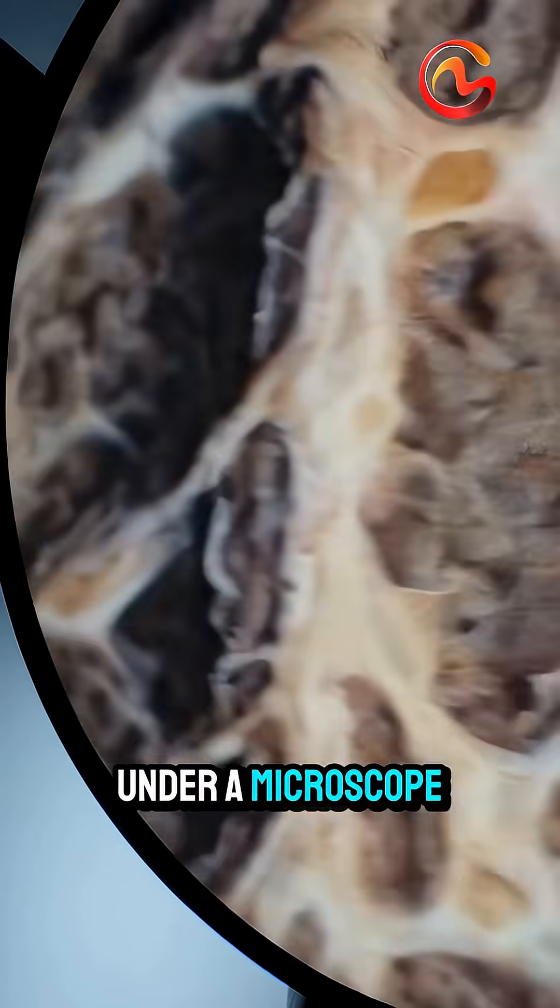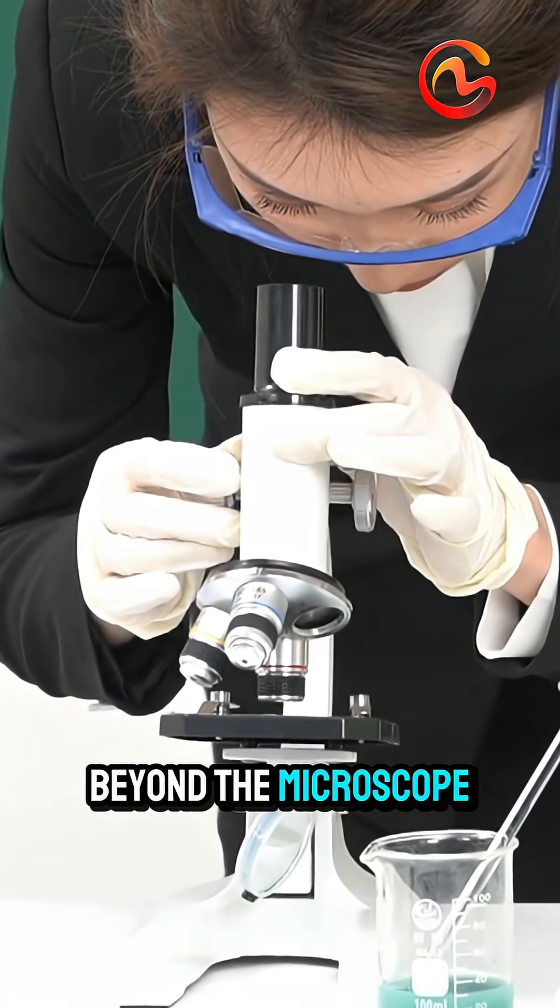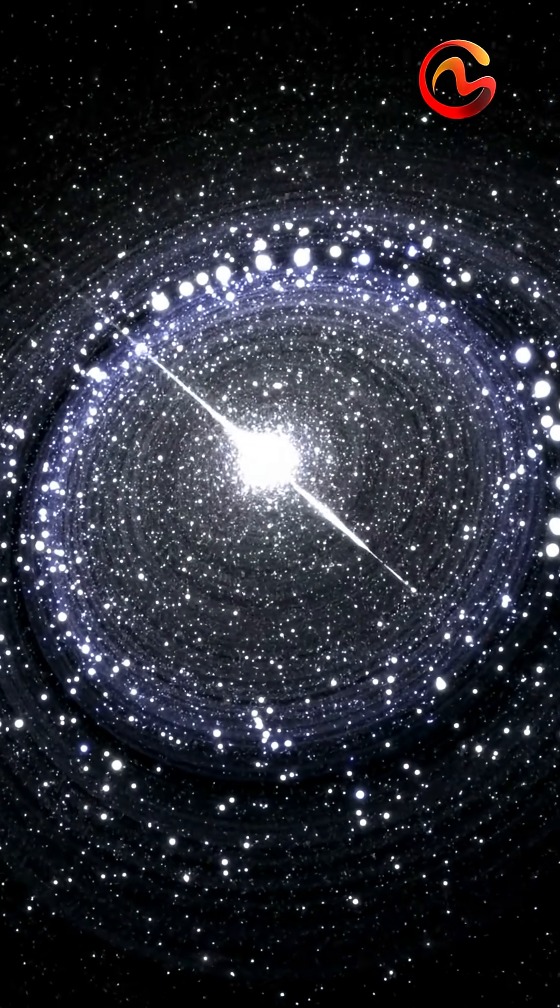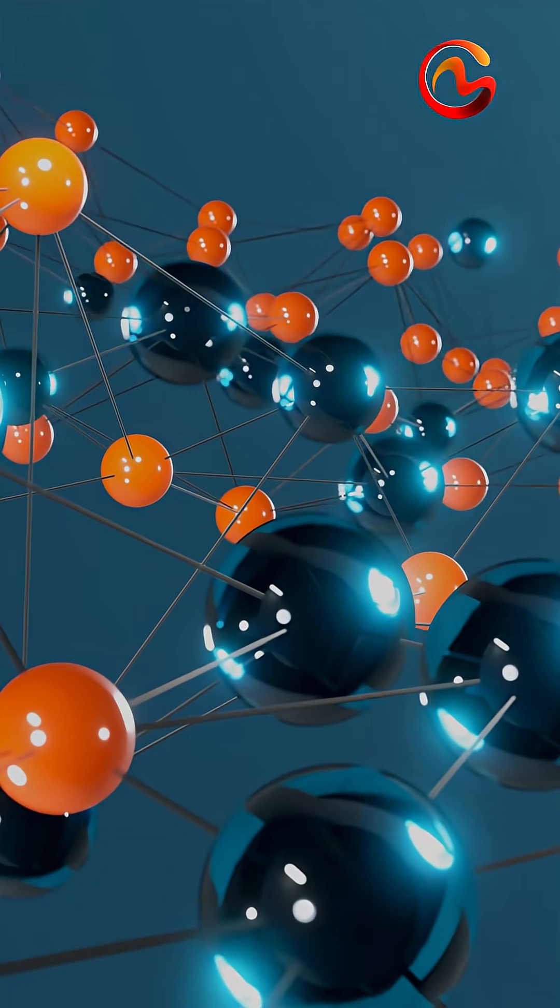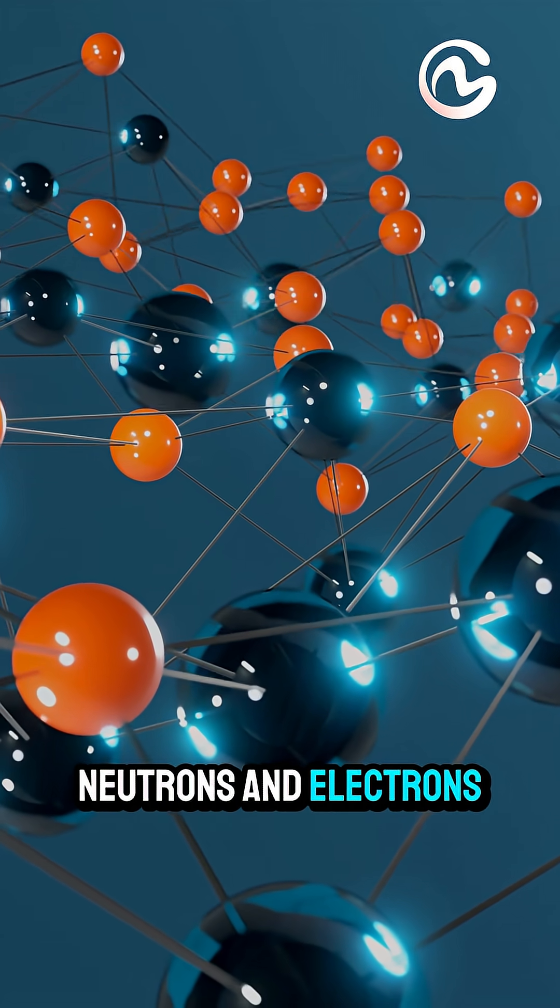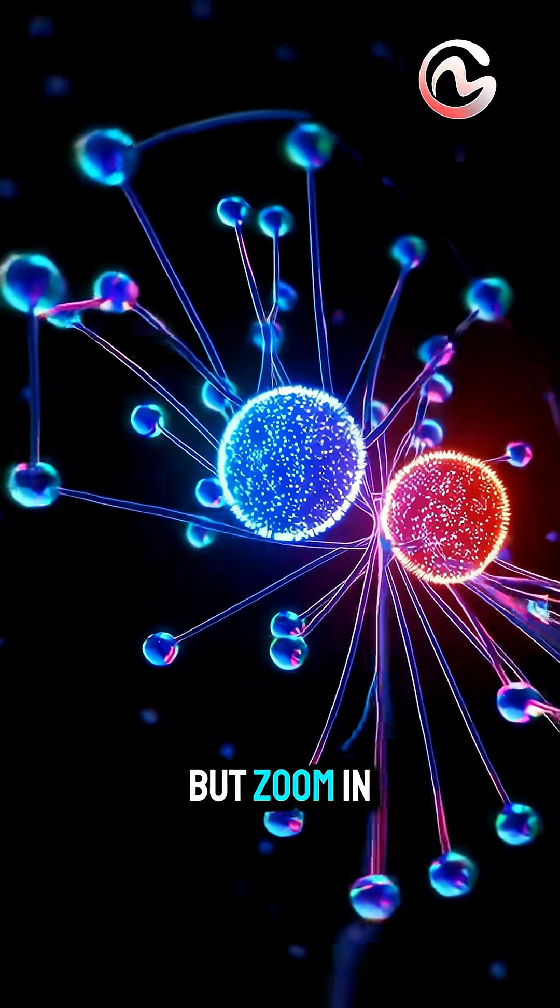You've seen cells under a microscope, but what lies beyond the microscope, smaller than even atoms? Atoms are made of protons, neutrons, and electrons. But zoom in further.